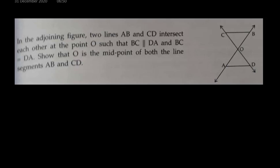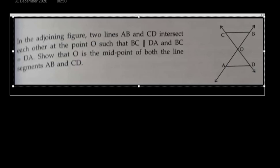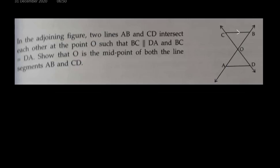In the adjoining figure, two lines AB and CD intersect each other at point O, such that DC is parallel to DA and BC equals DA. So it is given that BC and DA are parallel as well as they are equal. BC and AD are parallel and they are equal.